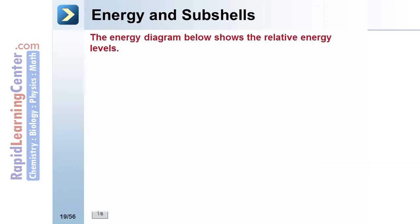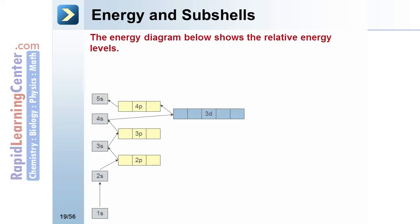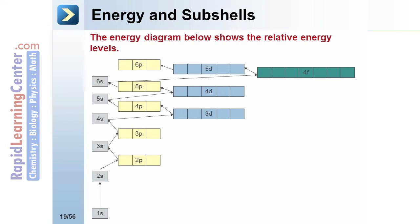Watch as a diagram shows the energy levels from the lowest subshell to higher subshells. 1s is the lowest energy subshell, and 6p is the highest shown on this diagram.